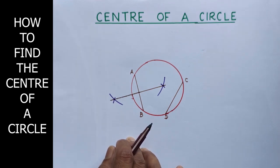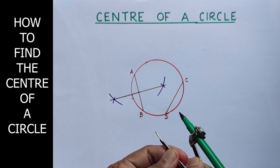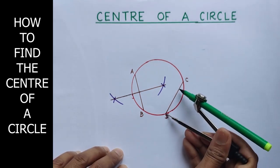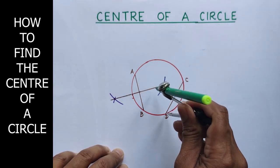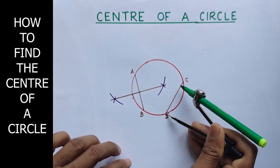Similarly, we can find the perpendicular bisector of CD also. For that, place the metal tip at D. And take more than half of CD. Draw one arc above. One arc on the left side and another on the right side.